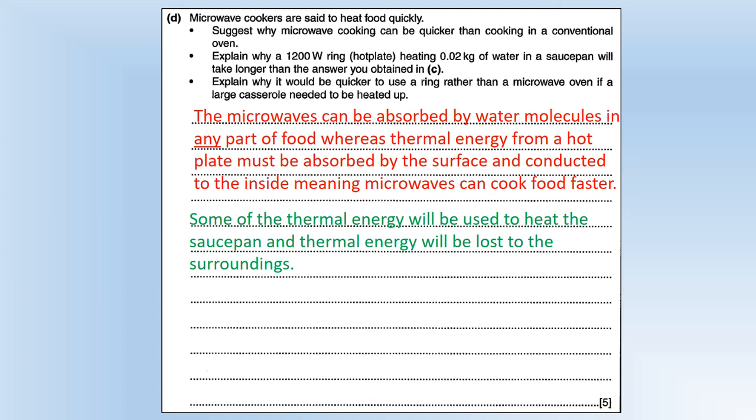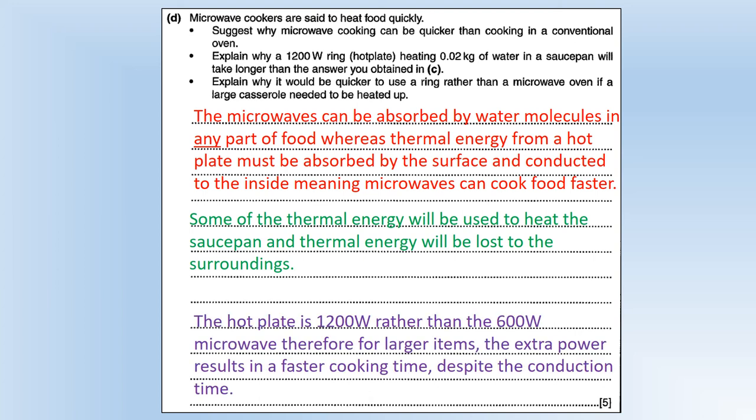Why would you use a cooker rather than a microwave oven? In this situation, having twice the power is going to be beneficial because you're trying to supply a large amount of energy to a very big item, therefore the extra power is going to reduce the time it takes even though you need some time for conduction.